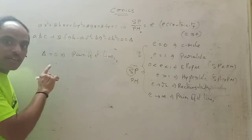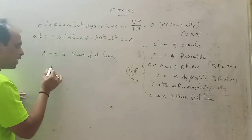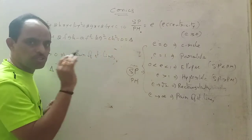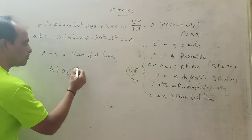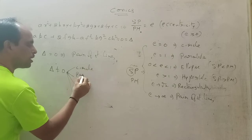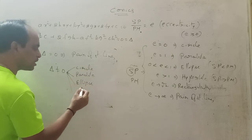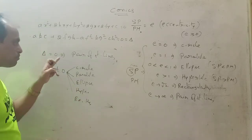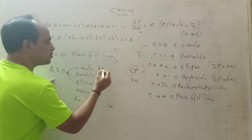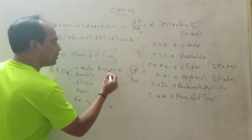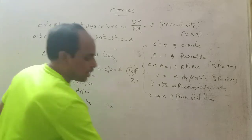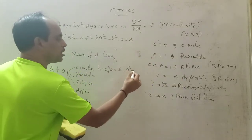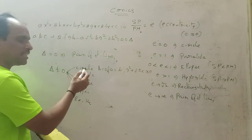If delta = 0, the equation represents a pair of straight lines. If delta ≠ 0, then the equation represents a conic — either a circle, parabola, ellipse, or hyperbola. For a circle: delta ≠ 0, h = 0, a = b (coefficient of xy is 0, and coefficient of x² equals coefficient of y²), and g² + f² − c ≥ 0.